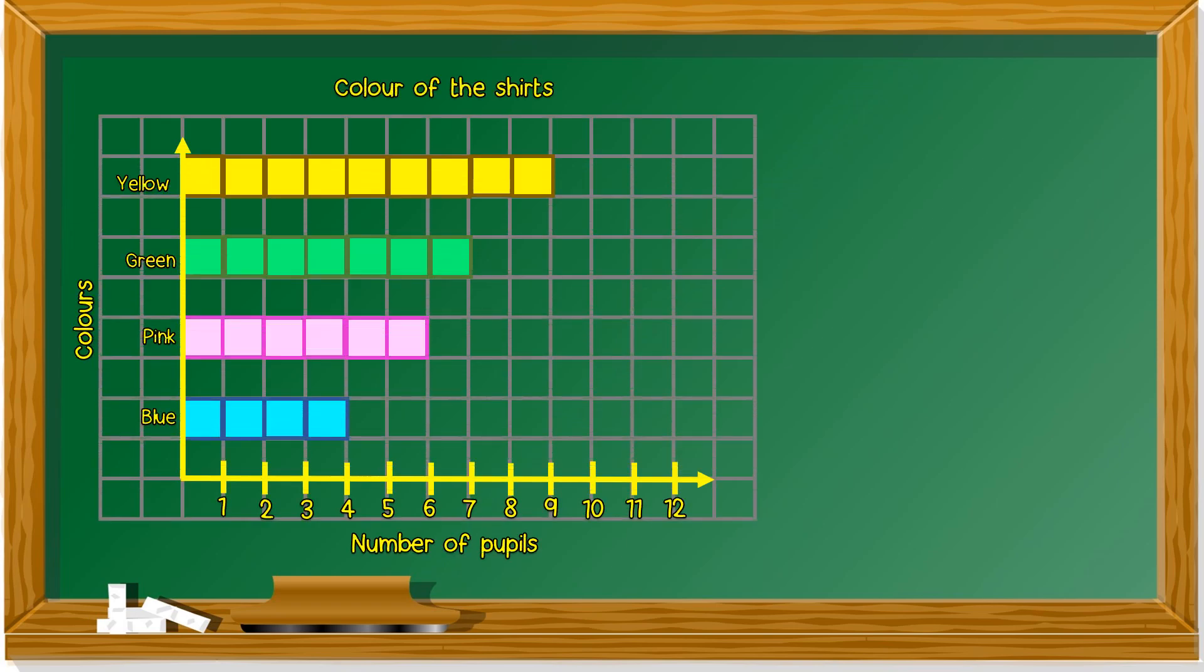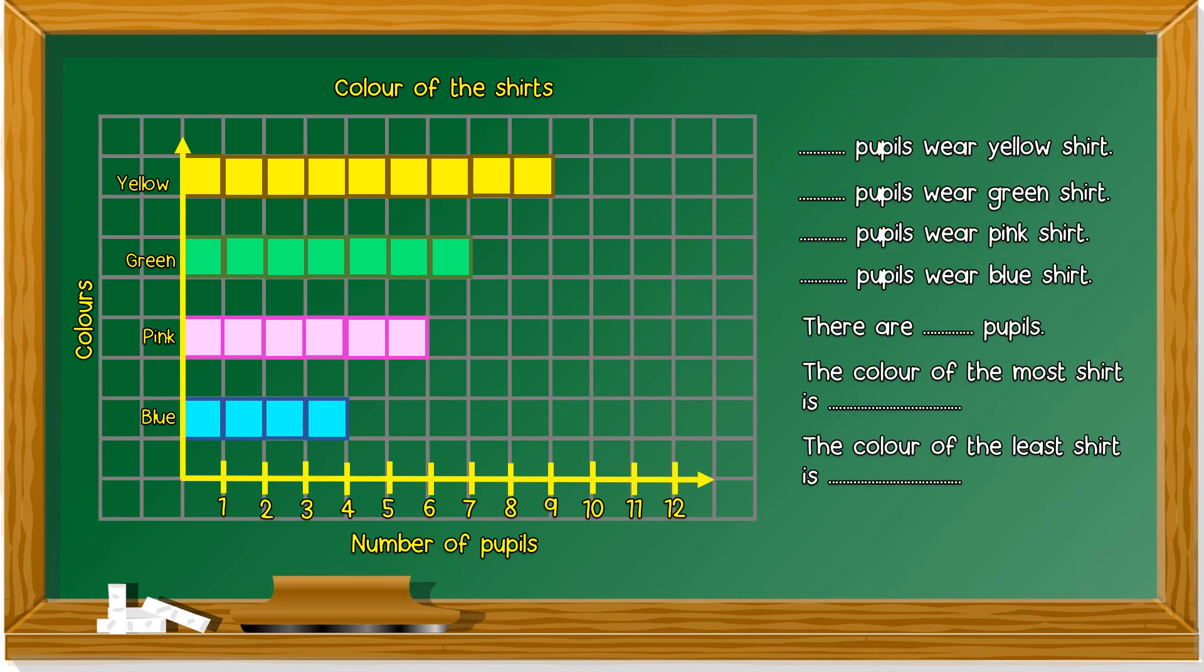We take a look at another bar chart. Is this a vertical bar chart? Or a horizontal bar chart? It's a horizontal. Because it's going to the side. It's a vertical bar chart. Let's try to complete this.